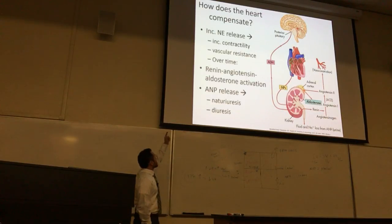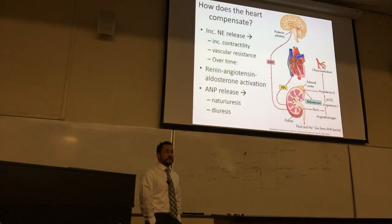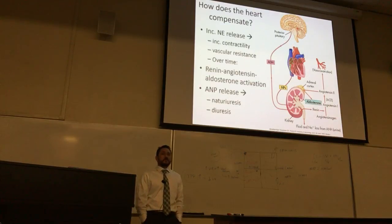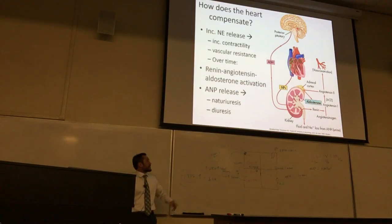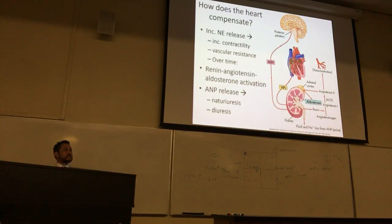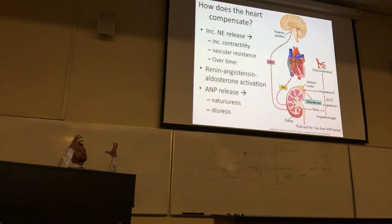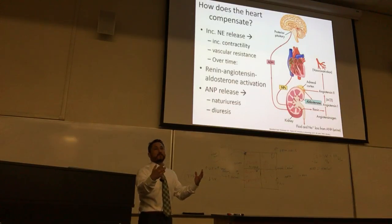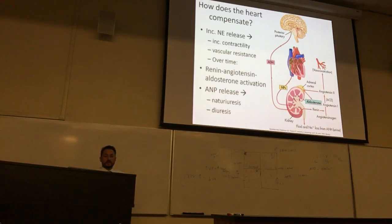The first solution gives weeks to months of benefit, the second solution weeks to months. The third solution is more like months to maybe years. There's a peptide released from the atrium — atrial natriuretic peptide, ANP — released when the atrium is swelling beyond what it's supposed to. The word natriuresis means to increase the amount of sodium excreted in the urine, and water follows sodium — so water leaves as well.